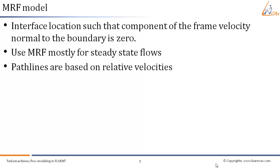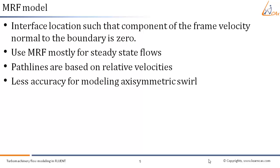Also, coupled DPM calculations are meaningless if relative velocities are considered. For this, we have to use an alternative approach: we have to activate the Define → Models → DPM option using the 'track in absolute frame' text command. Also, you cannot accurately model axisymmetric swirl in the presence of multiple reference frames using the relative velocity formulation. Hence, we have to switch to absolute velocity formulation. The reason is that the swirl velocity derivative does not use the transformation required for MRF.